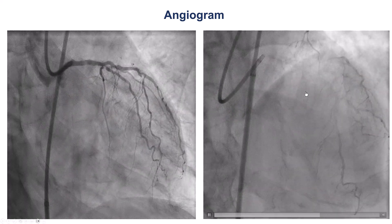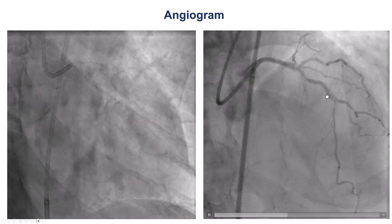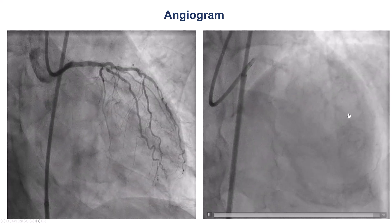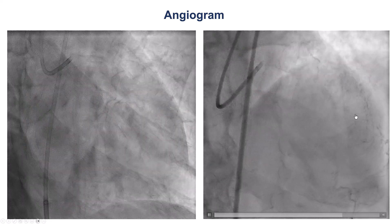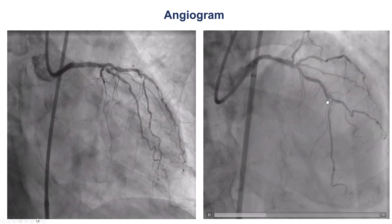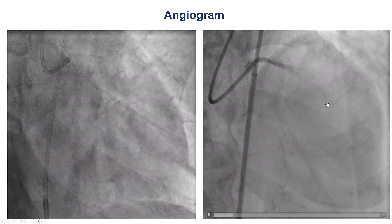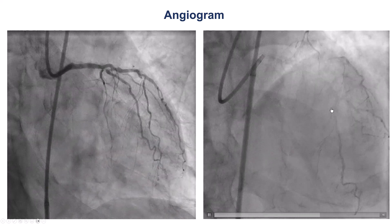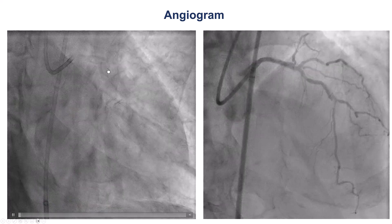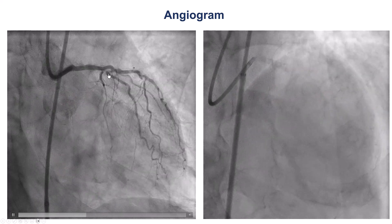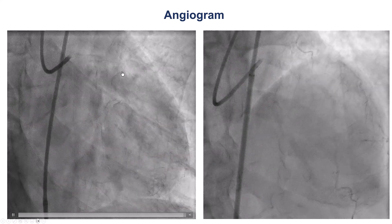This is the coronary angiogram. There is severe disease in the middle LAD and also at the bifurcation with a diagonal branch, and this appears to be hazy. This is the area where the previous wiring was unsuccessful. There is also disease into the osteo-ramus branch, some disease in the distal left main, and there is heavy calcification.